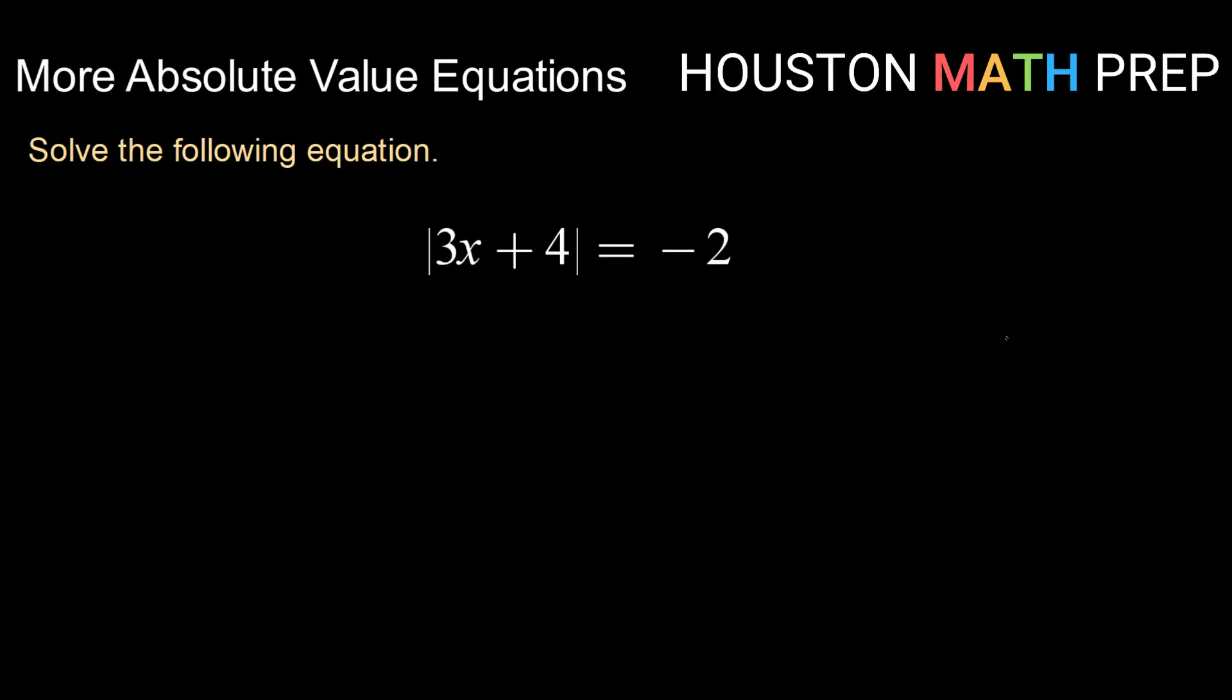Alright, checking out this next one. Solve the following equation. We have the absolute value of 3x plus 4 equals negative 2.